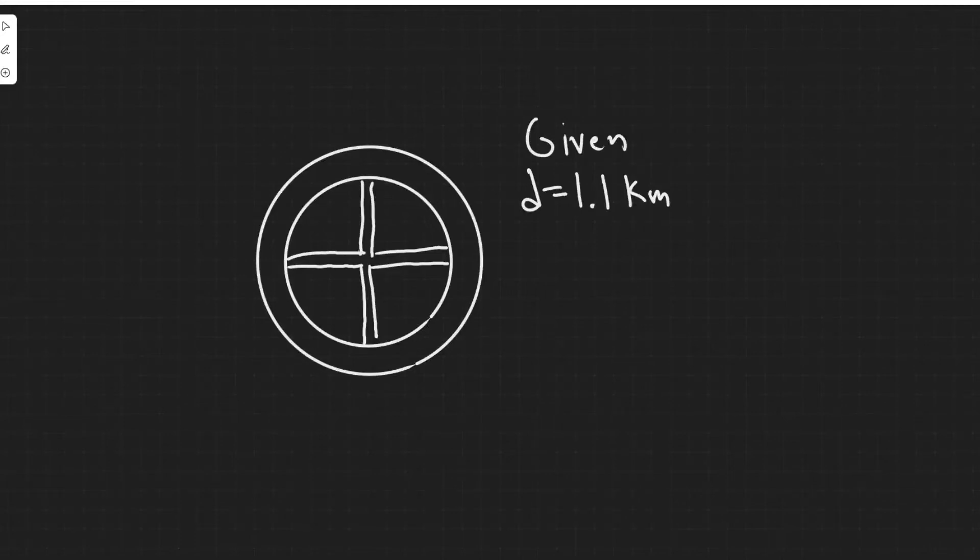Okay, so in this problem we're told a proposed space station consists of a circular tube that will rotate about its center like a tubular bicycle tire. The circle formed by the tube has a diameter of about 1.1 kilometers. What must the rotation speed, revolutions per day, if an effect equal to gravity at the surface of Earth, 1g, is to be felt?